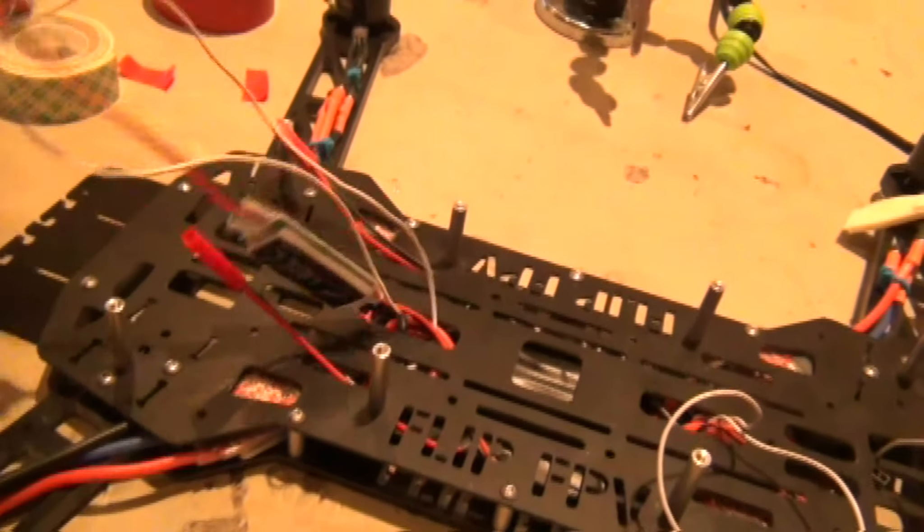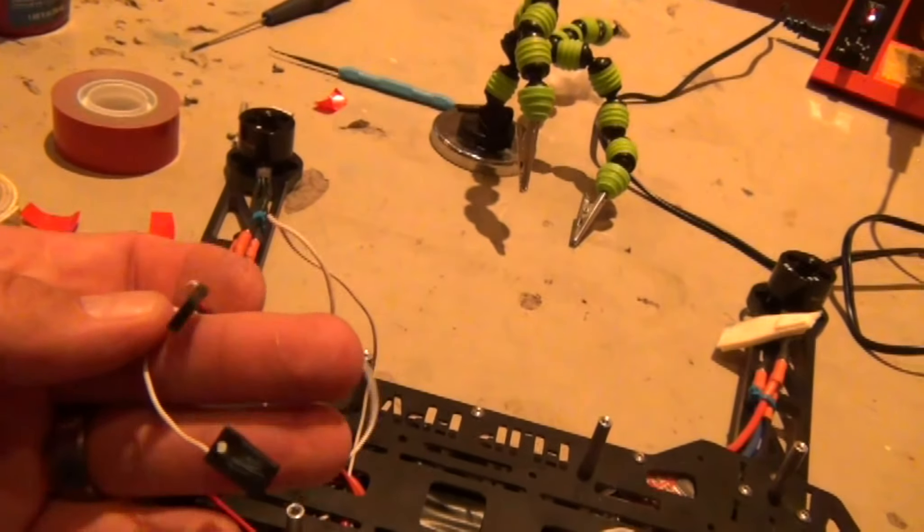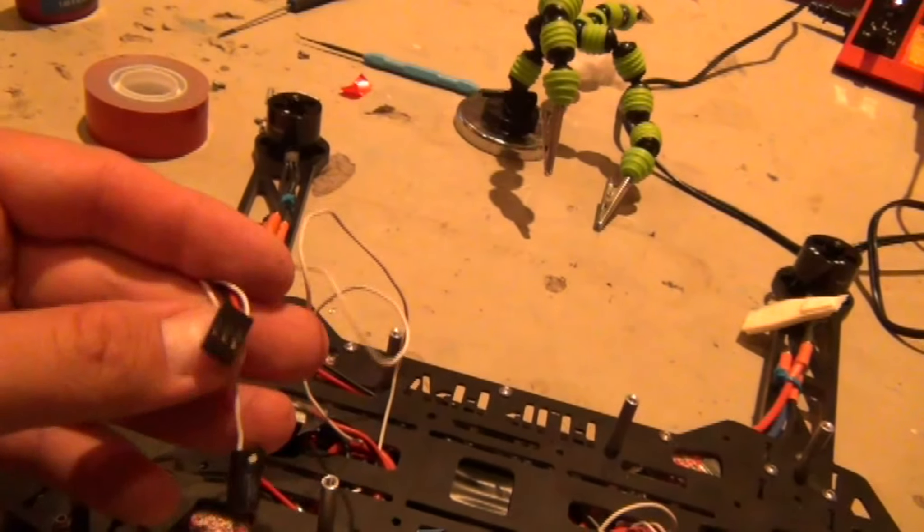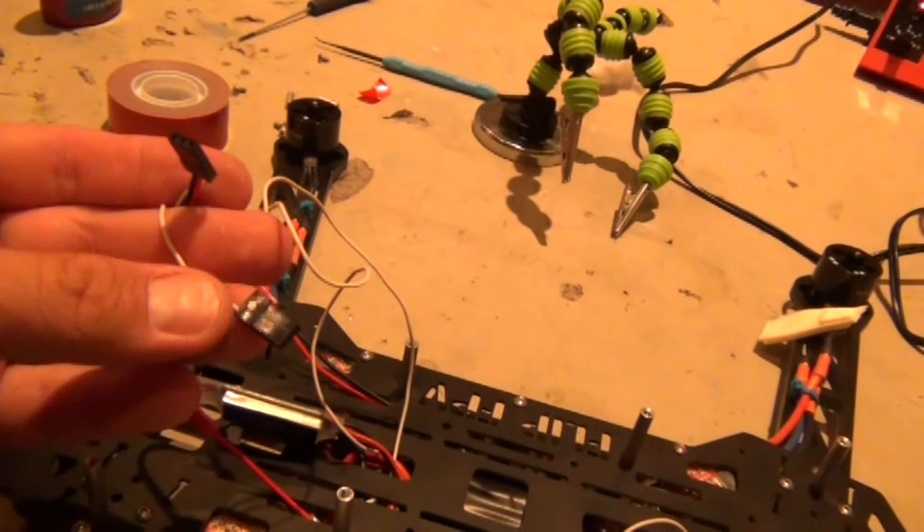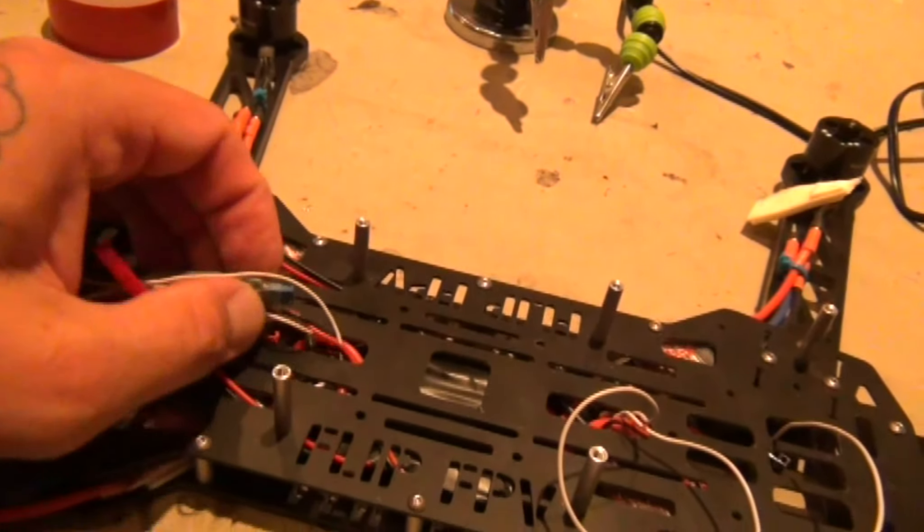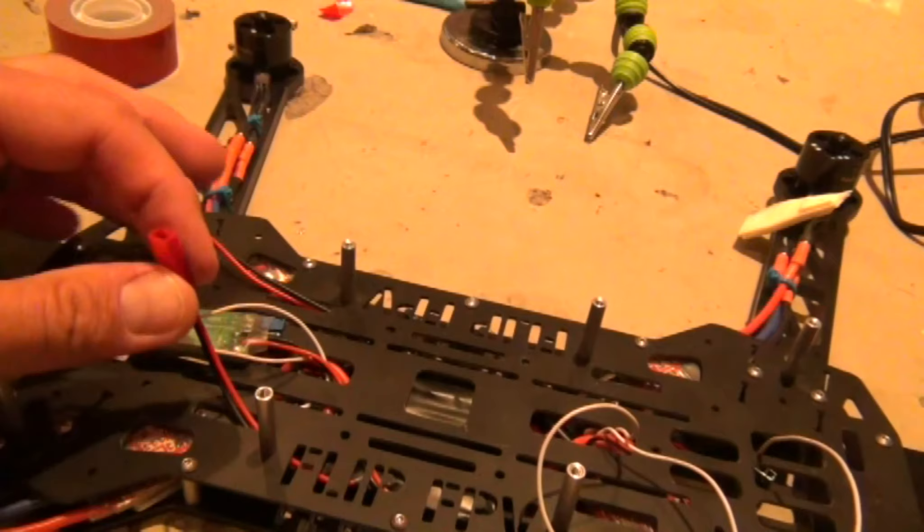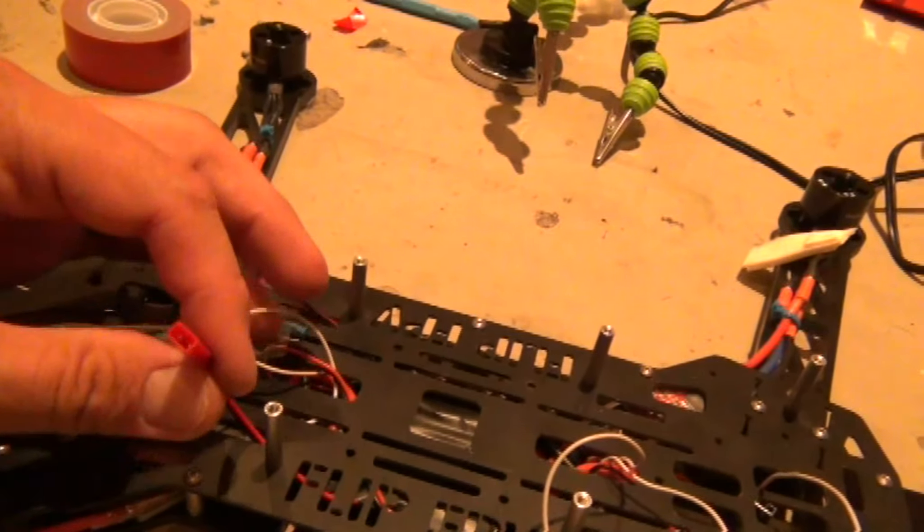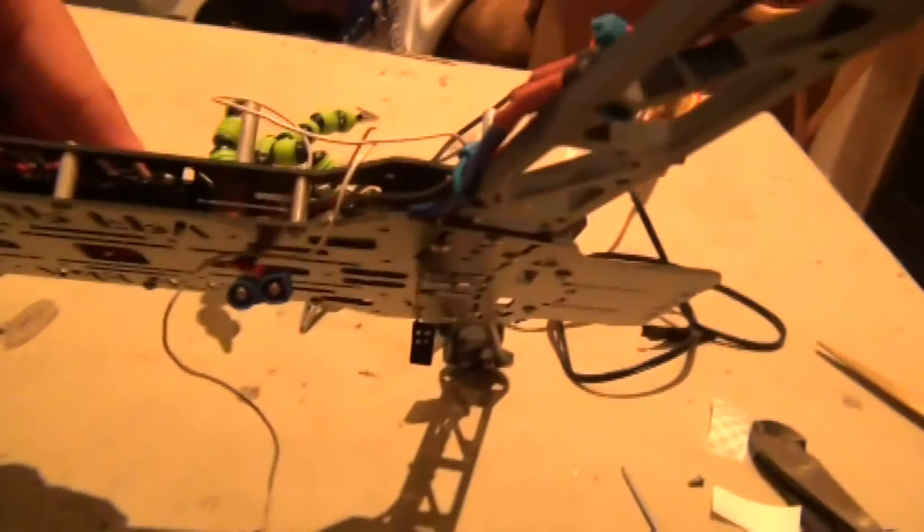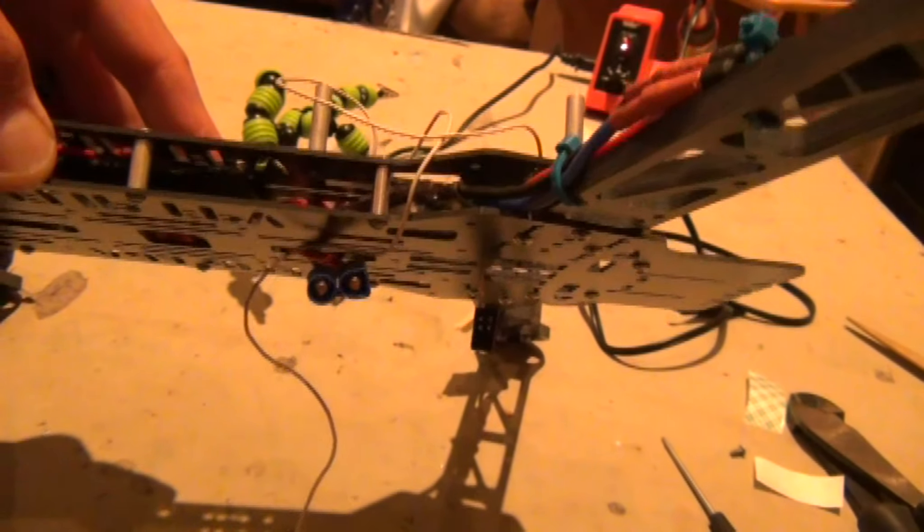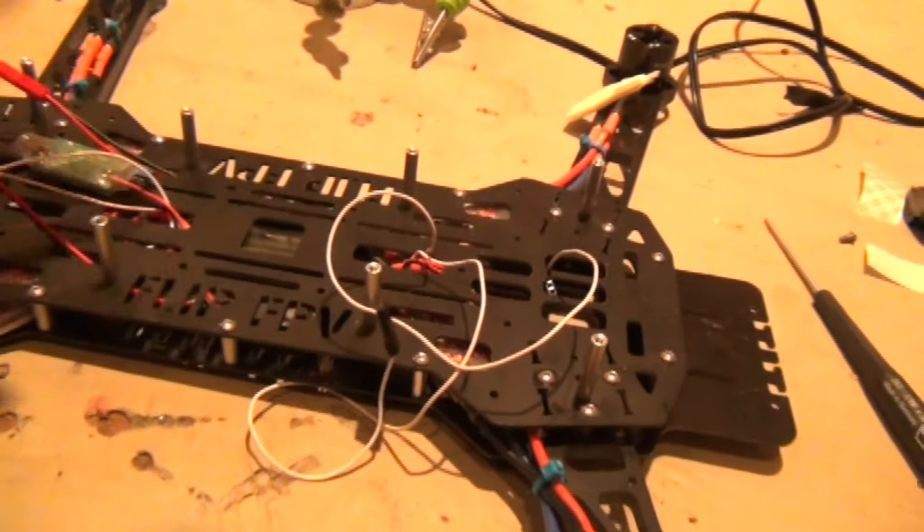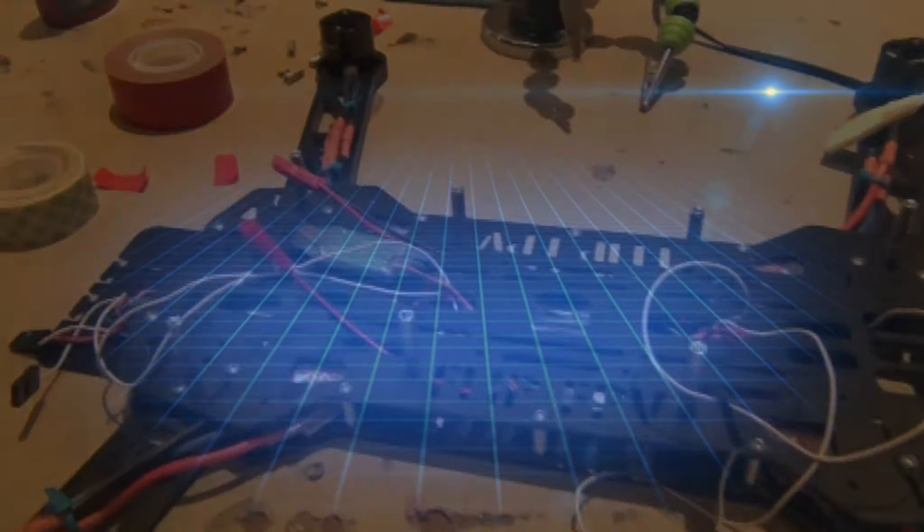We've got plus and minus from the BEC, and here's the BEC. My two additional JSTs for extra power off the distribution board, and on the bottom I've got my EC3 for my main power pack. Then we've got to reinforce it.